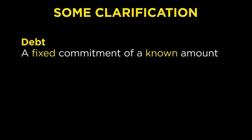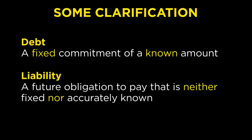While debts are technically a type of liability, for the purposes of this chapter, when we refer to a debt we're talking about a fixed commitment of a known amount. When we say liability, we're referring to a future obligation to pay that is neither fixed nor accurately known. We're making this distinction because the media and even our government often treat the two very differently — something Congress reminds us of every time they say that Social Security and Medicare can be modified at any time, and therefore don't count the same as our national debt.